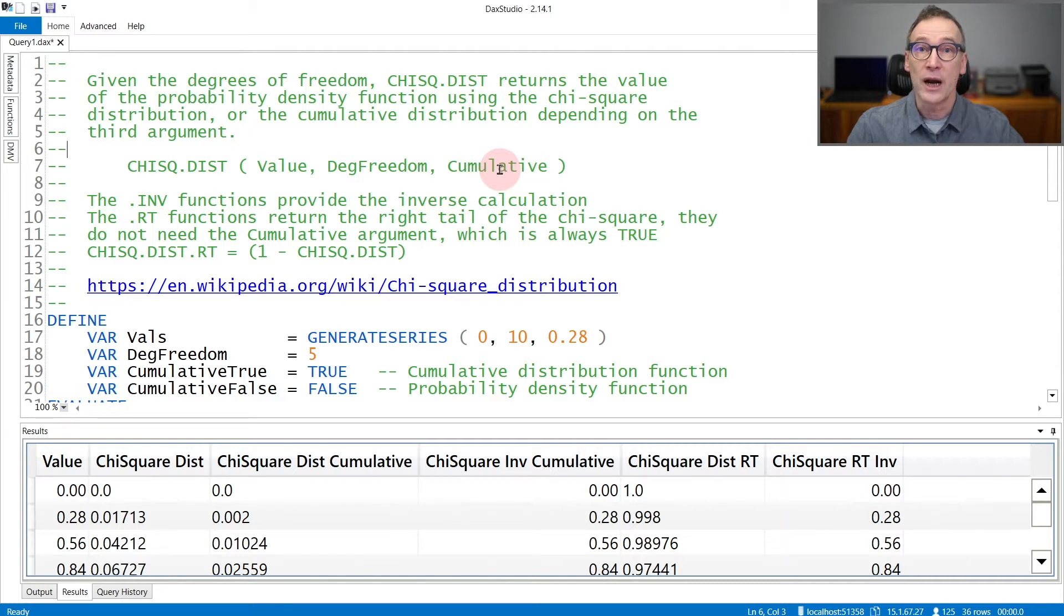Finally, you provide the third argument, cumulative, that defines whether you want the function for that point or the cumulative value.